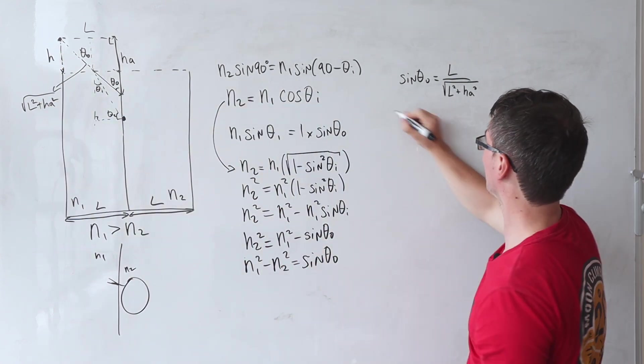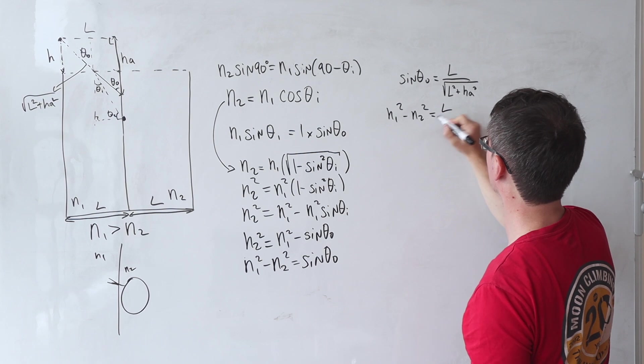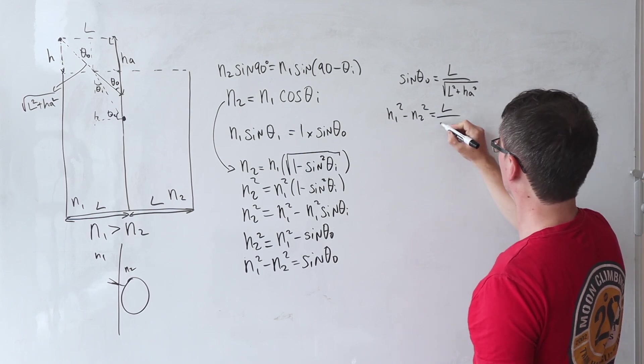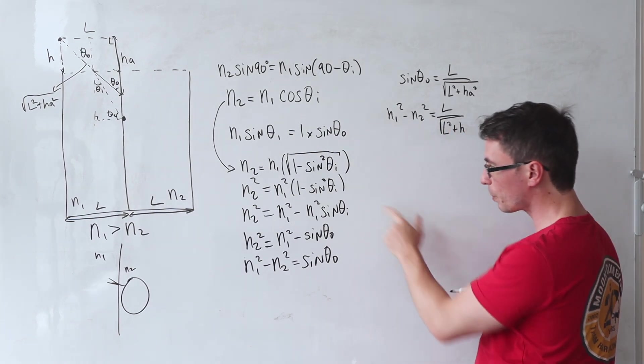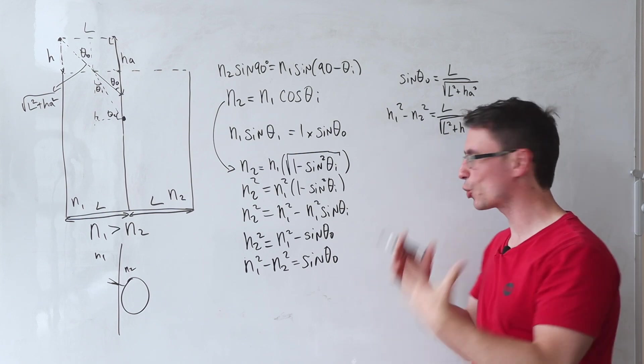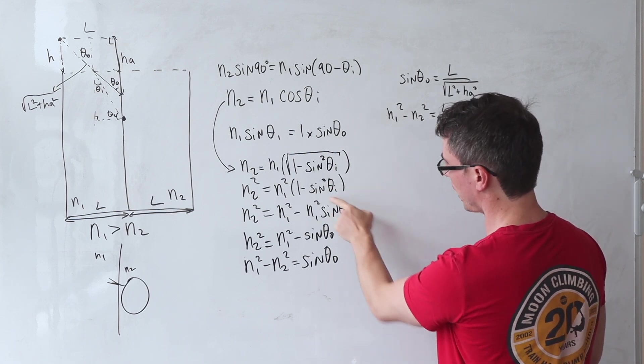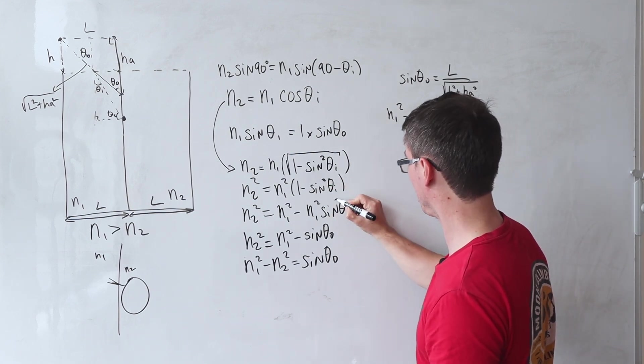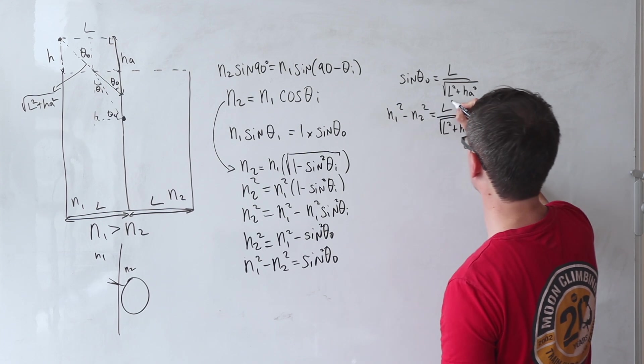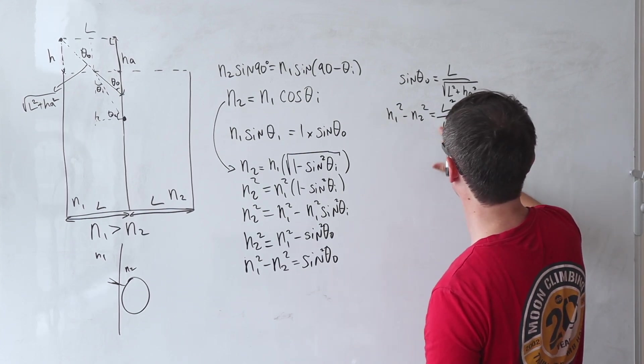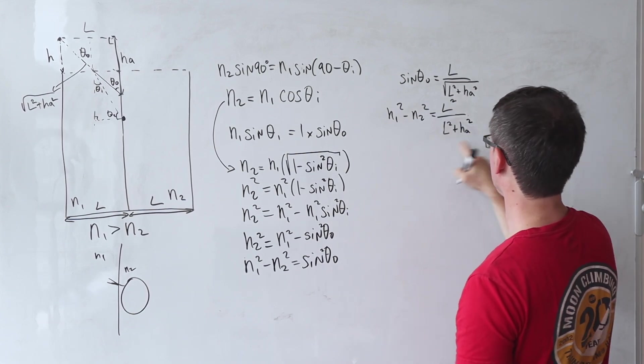So what we're going to get is N1 squared take away N2 squared is going to be equal to L over root L squared plus... Oh, and look at that. I've just spotted a mistake. I think I'll keep that in the edit to show you guys where you're potentially likely to do a mistake. But just something as simple as carrying the square can be really important. This here is sine squared, which means that this equation here is going to change to L squared divided by L squared plus HA squared.